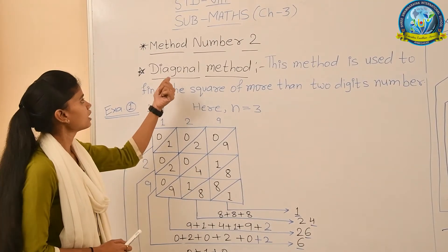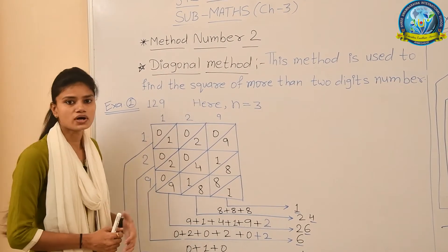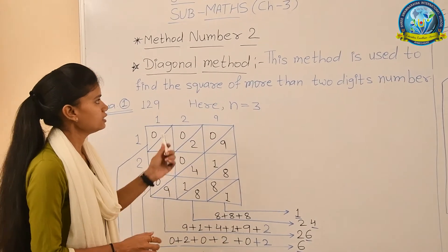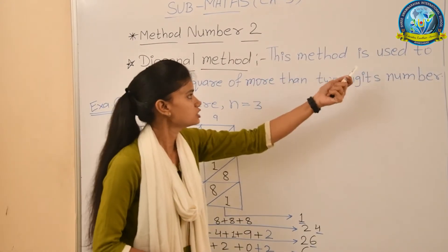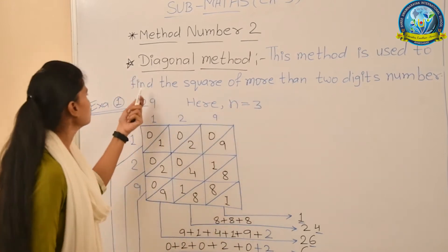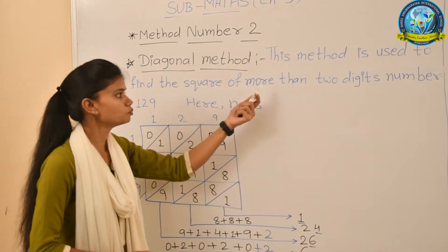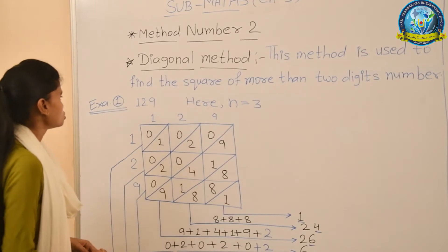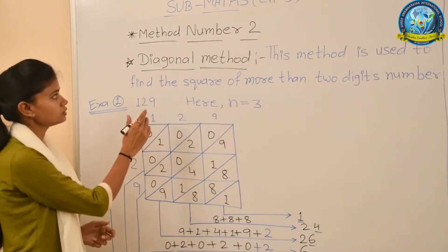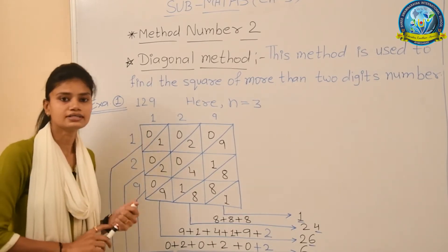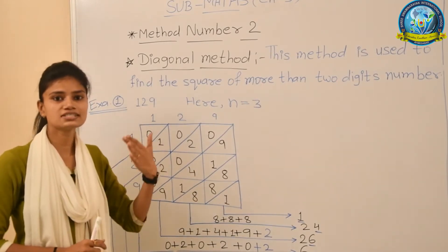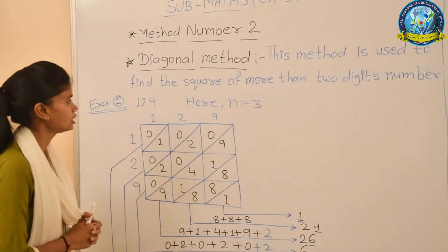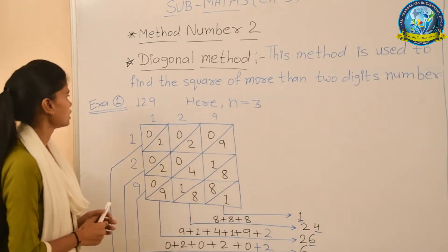The second method to find the squares of a number is the diagonal method. This method is used to find the squares of numbers with more than two digits. In the diagonal method, we find the square based on how many digits the number has.